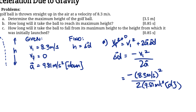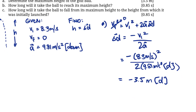8.3 squared divided by 2 and 9.81 gives us negative 3.5 — about negative 3.5 to two significant figures. The meters per second and meters per second squared cancel out, so we end up with meters. This might look funny because it's a negative answer, but remember this is a displacement which includes a direction. Negative 3.5 meters down doesn't quite make sense, so we can switch that around: instead of negative 3.5 meters down, we say 3.5 meters up.